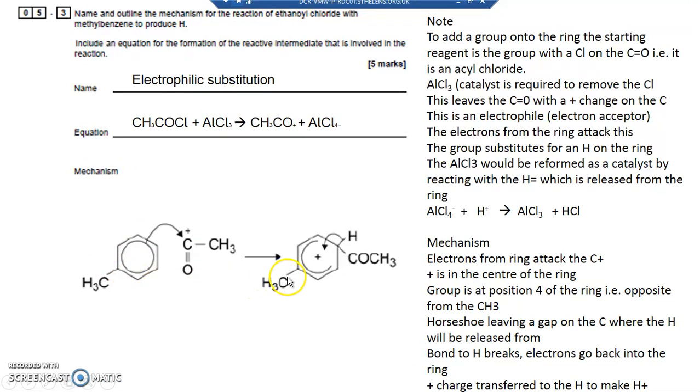So I've just rotated it round, but if this is carbon number one, two, three, four, it's opposite. And I need to draw the H on there as well. I need to draw a horseshoe. It should go a little bit further round actually. That's a very wide horseshoe. It should go a little bit further round with a plus in the middle of the ring because it's the ring that's lost electrons.